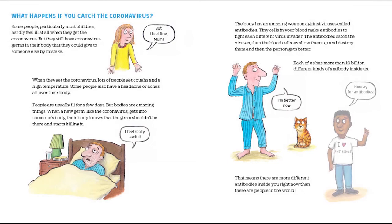Each of us has more than 10 billion different kinds of antibodies inside us. That means there are more different antibodies inside you right now than there are people in the world.